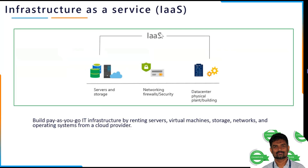In the cloud, there are three types of services. The first is Infrastructure as a Service — basically, build and pay as you go. For example, you can rent a virtual machine, do storage, and set up networking. There is also firewall security and physical security. The cloud service provider manages the VMs. That is Infrastructure as a Service.